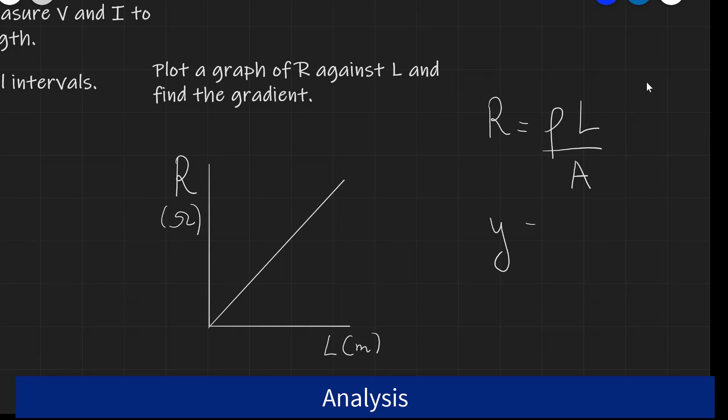If R is on the Y axis and if L is on the X axis, we're expecting the graph to be a straight line through the origin as shown. So we could just apply our rules that Y equals MX plus C.